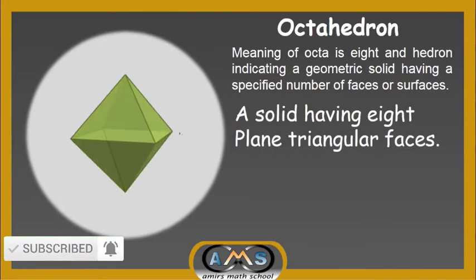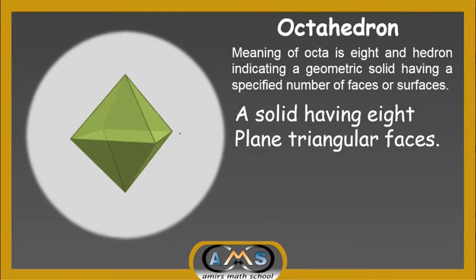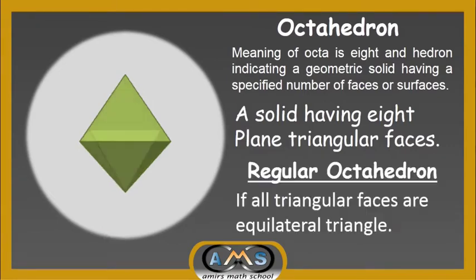Now, let's see when we can call this octahedron a regular octahedron. If all the triangular faces are equilateral triangles, in that case we can call the octahedron a regular octahedron.